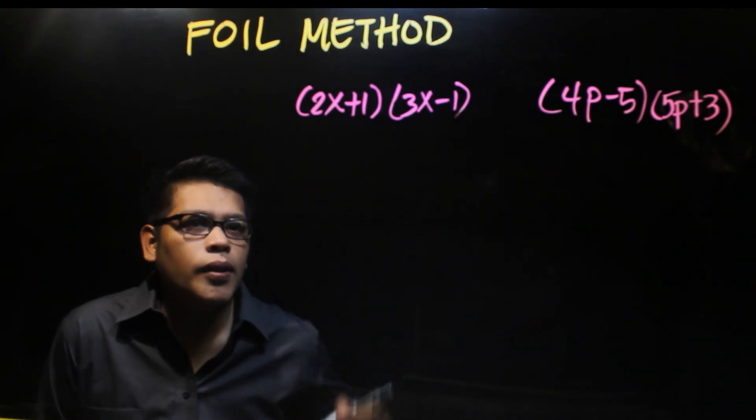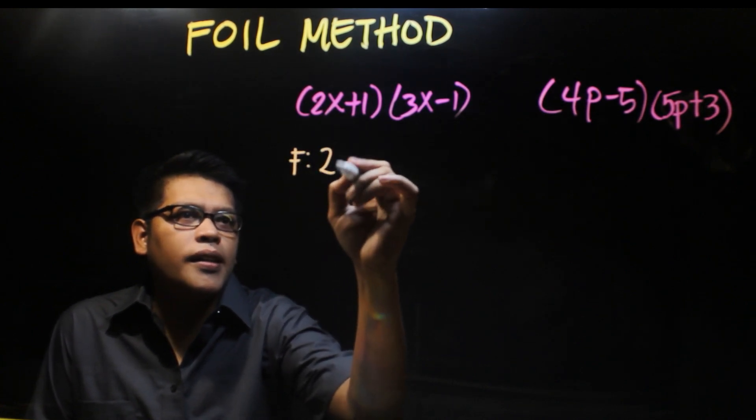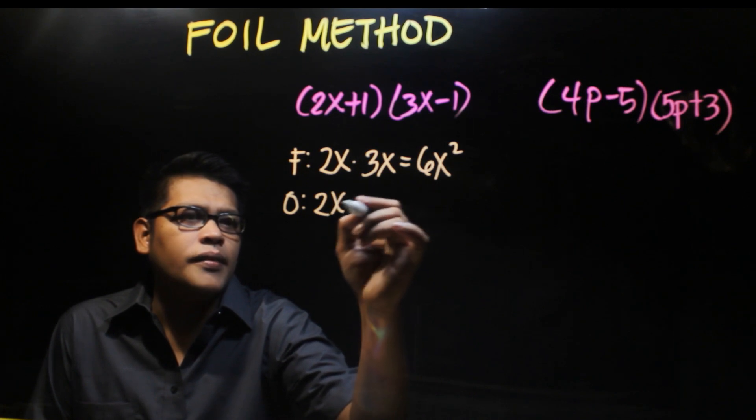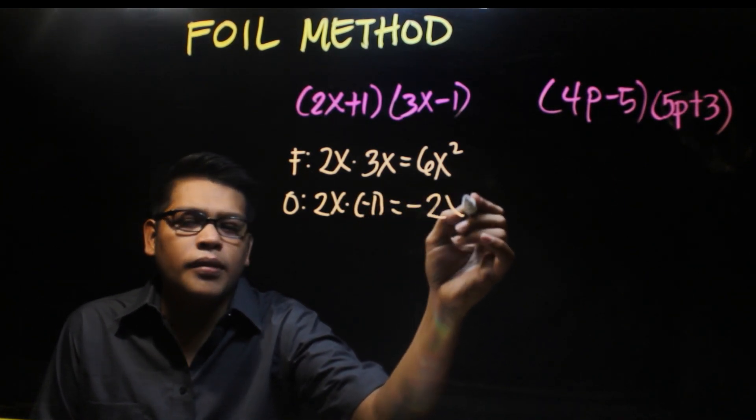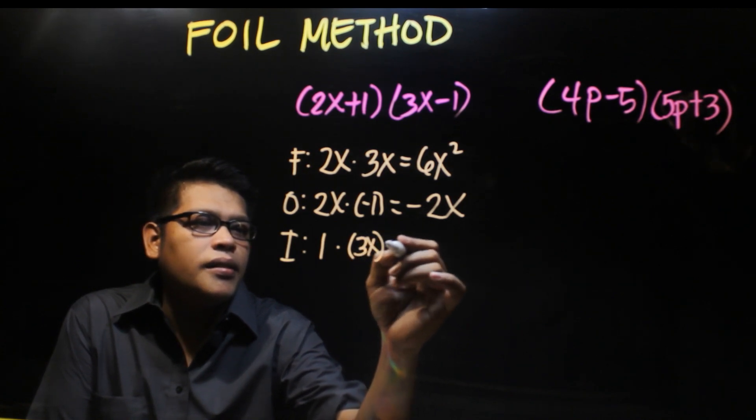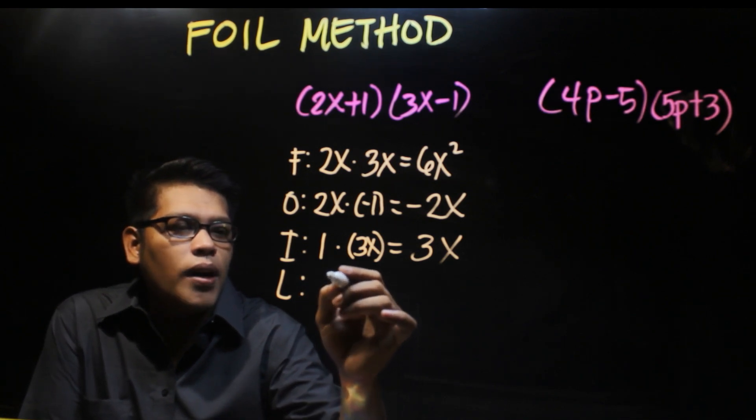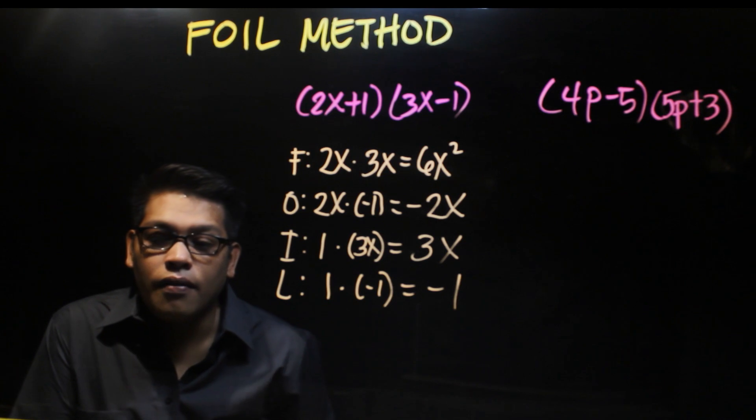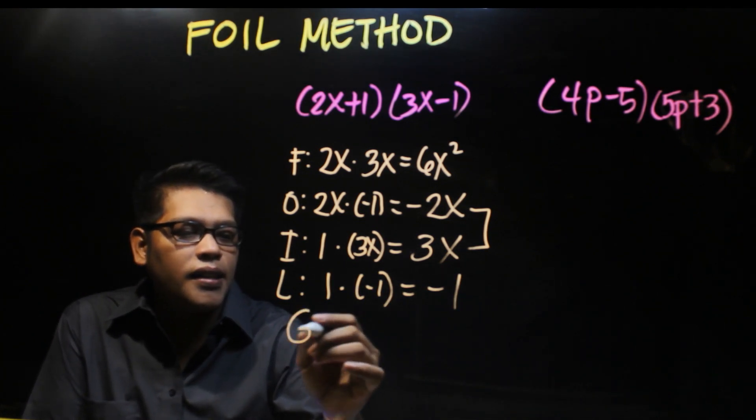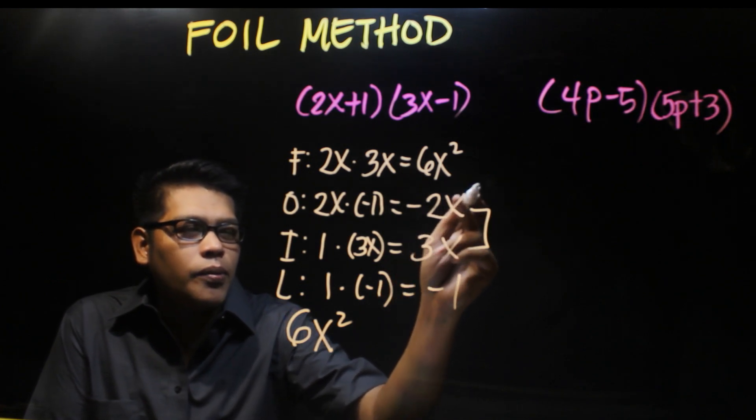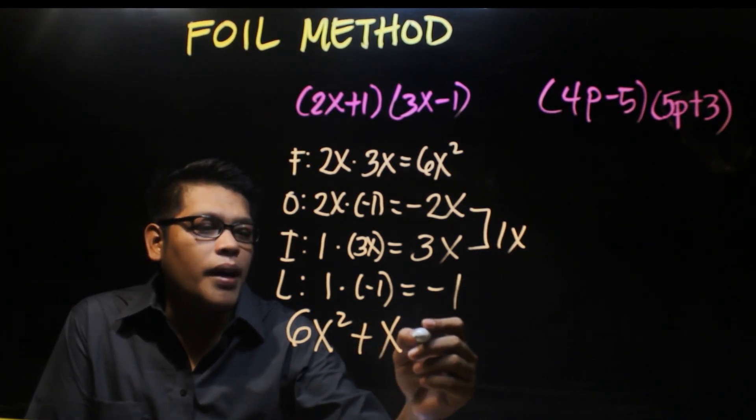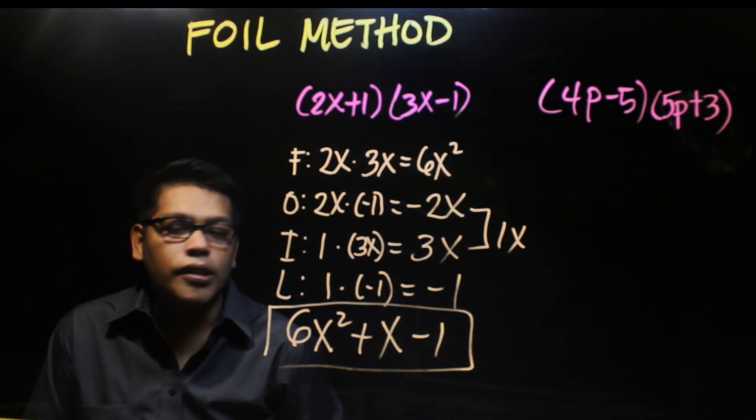Let's solve it. The F here is 2x times 3x which is 6x². O is 2x times -1 equals -2x. I is 1 times 3x which is 3x. L is 1 times -1 which is -1. Combining like terms, the final answer is 6x² minus 2x plus 3x, which is x, then minus 1. So the final answer is 6x² + x - 1.